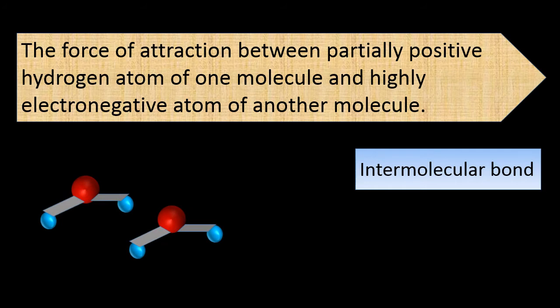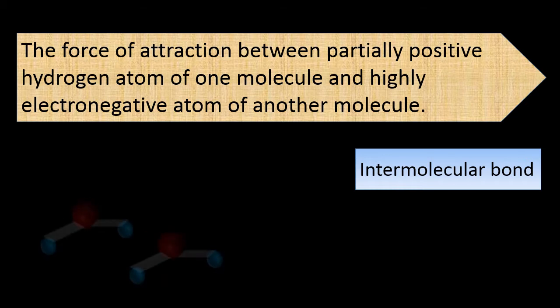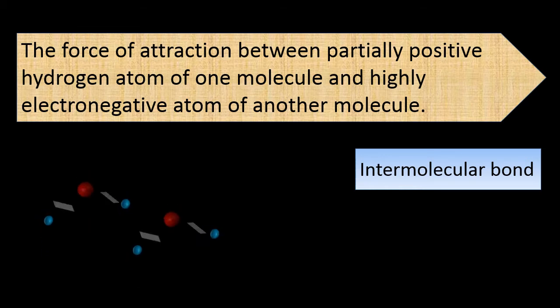Now take an example of water. Water is made up of one oxygen and two hydrogen atoms. If I take a glass of water, there are trillions of water molecules present in it. How these water molecules will connect with each other? They will connect with each other by means of hydrogen bonding. Hydrogen of one molecule will form a bond with oxygen of another molecule and that will be shown by means of a dotted line.